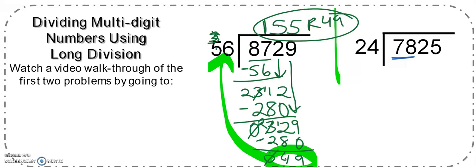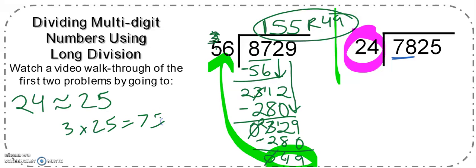So I can use my same thinking alike strategy. 24 is almost 25. I like 25 because it's like quarters. So if I had 25 cents, if I had 3 25 cents, that would give me 75 cents. So 3 times 25 is 75. That's really close to 78. So I'm going to guess that I can make three groups of 24.